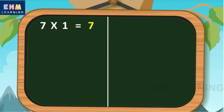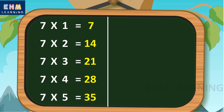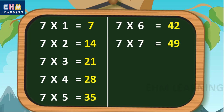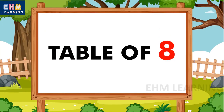Let's learn again. Seven ones are seven, seven twos are fourteen, seven threes are twenty-one, seven fours are twenty-eight, seven fives are thirty-five, seven sixes are forty-two, seven sevens are forty-nine, seven eights are fifty-six, seven nines are sixty-three, seven tens are seventy.